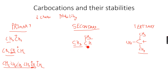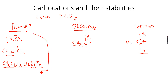Because the secondary carbocation carbon is directly attached to two alkyl groups, both of them move electrons towards it, and therefore the charge is lowered even further compared to the primary case. The stability is therefore even higher.